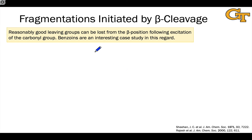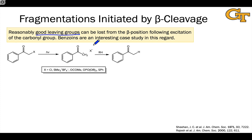Photoexcitation can induce the loss of a variety of good leaving groups from the alpha carbon of ketones and aldehydes through a beta cleavage process. All of these can support radical character to a greater or lesser extent, so they can all be released through photochemical beta cleavage. In the presence of a hydrogen donor — even relatively weak hydrogen donors such as alcoholic solvents — we would get essentially net reduction, replacing a bond to a more electronegative atom with a bond to less electronegative hydrogen.